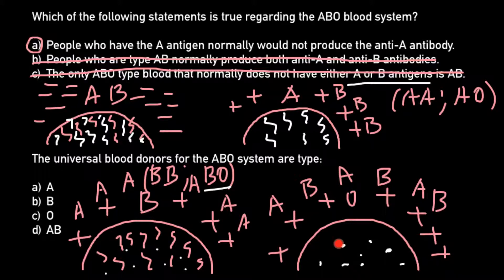Blood group O, which has no A or B antigens on its red blood cells, can be the universal donor for any of these blood groups. And our correct answer for this question would be answer C.